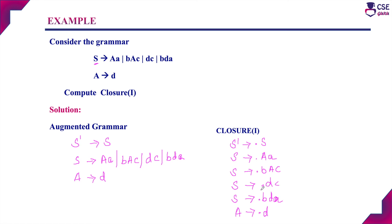Closure of I is computed by first writing the augmented grammar — required for implementing SLR, LALR, and CLR parsers. For each production in the augmented grammar, we add a dot in the RHS. If after the dot there is a non-terminal, we add dot-productions for all of that non-terminal's rules. In those new productions, if after the dot there is again a non-terminal, we repeat the process. This continues until there are no more non-terminal productions to expand. In the next session, we will discuss how to perform the goto operation using this closure of I.